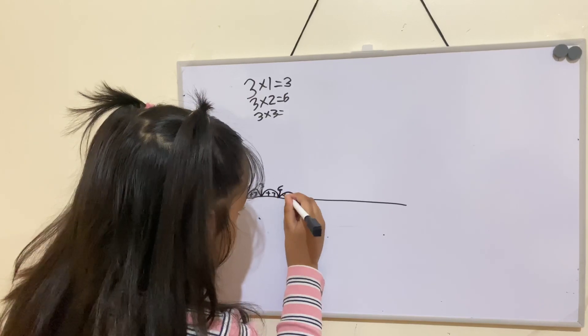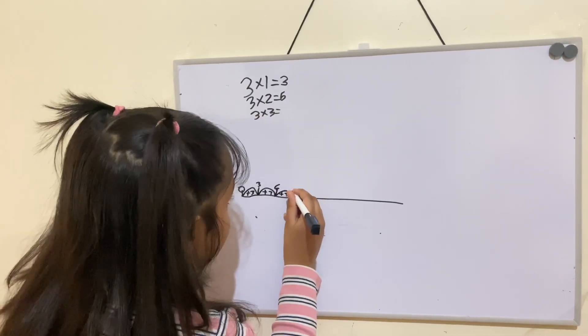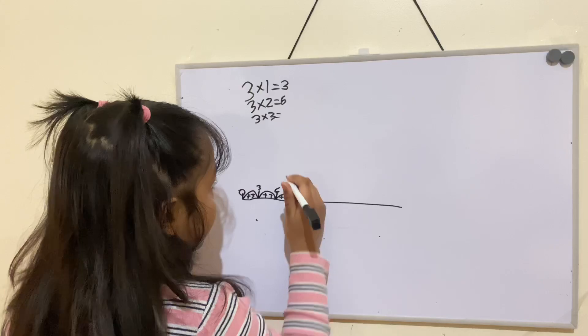So I'm going to put add 3 equals 9. The answer is 9.